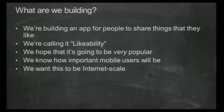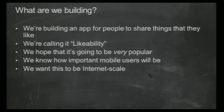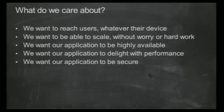We're building an application for people to share things they like, and we're calling it Likeability. We want to select an architecture and the right set of AWS building blocks so we can scale from 10 to 10,000 to millions of users without having to change our architecture later. Mobile users are first-class citizens, so the mobile component is very important. The key thing is making the right choices to achieve internet scale.